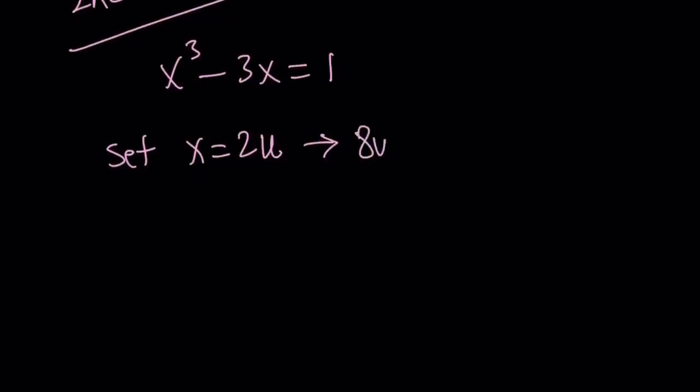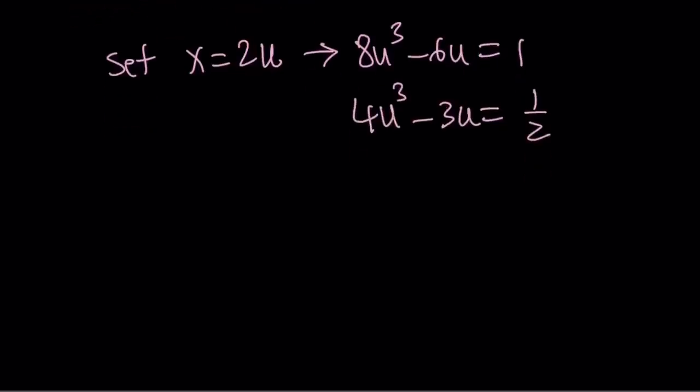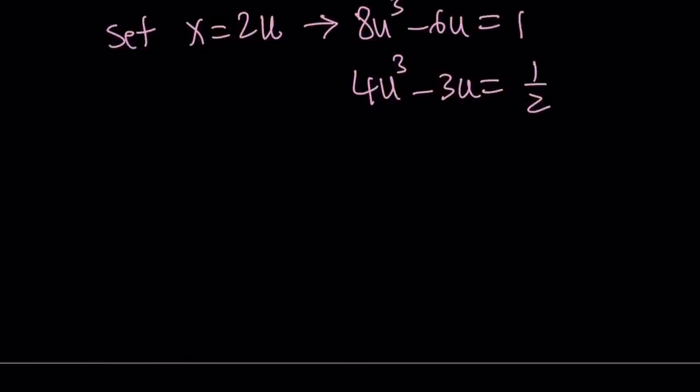That's going to give you 8u³ - 6u = 1. Why did I do that? Because I'm going to take advantage of the triple, what is that called? Triple angle formula. Divide both sides by 2.